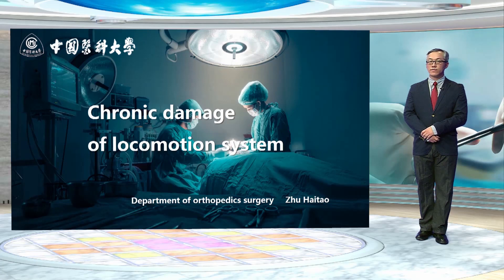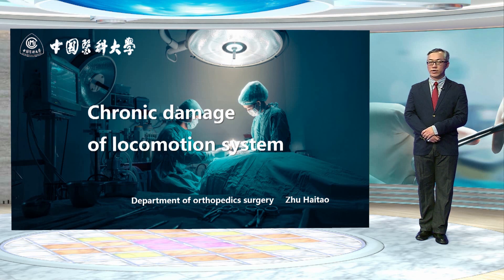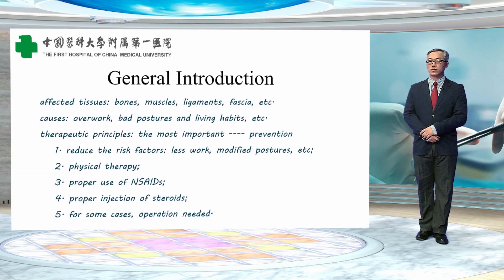Today I will show you something about chronic damage of the locomotion system. I'm from the department of sympathetic surgery, my name is Juhaito. First, a general introduction: the chronic damage may affect the tissues like bones, muscles, ligaments, fascia, and so on.